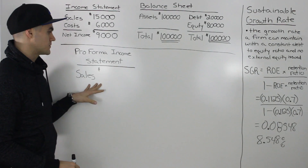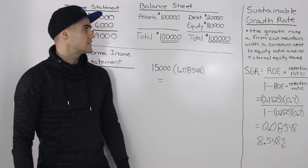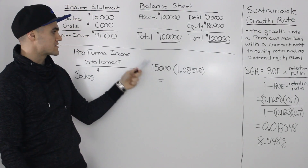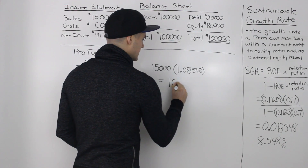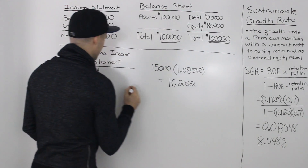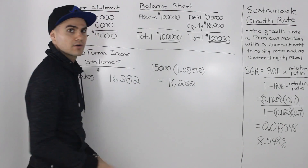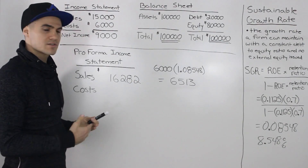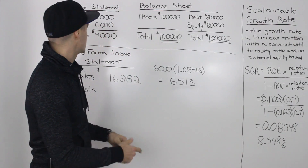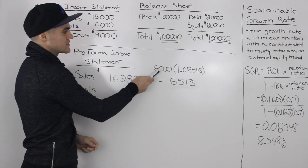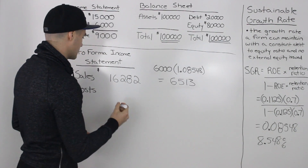Starting off with the pro forma income statement, the sales figure we're going to grow by the sustainable growth rate. So we'll take that previous sales figure of $15,000 multiplied by 1.08548, and when you input that in your calculator, you would get $16,282. That is the forecasted sales for the next period. Next up is the costs — costs are told to vary with sales, so they're also going to grow at the sustainable growth rate. Taking our previous cost figure of $6,000 multiplied by 1.08548, we would get a new cost figure of $6,513.